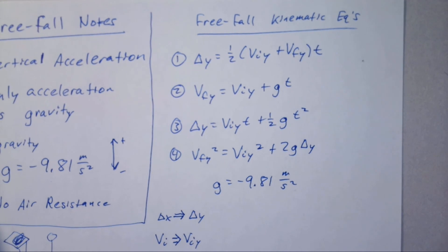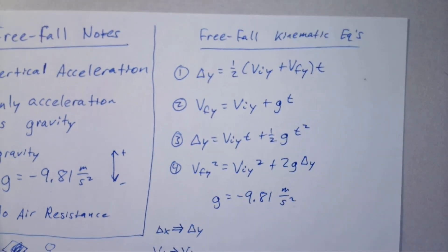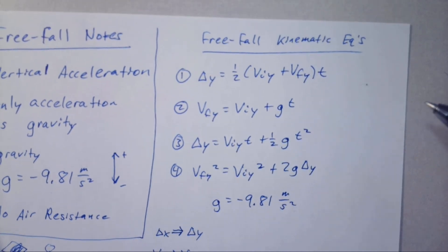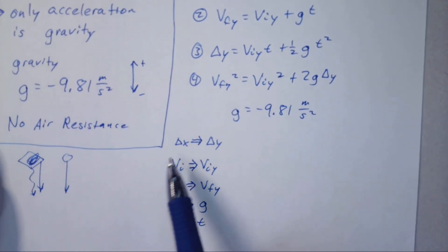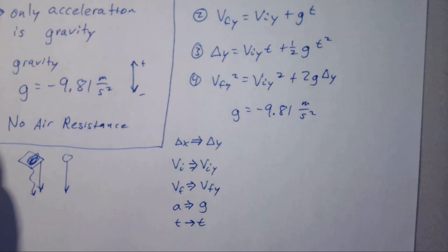Here are the free fall kinematic equations. They're very similar to the ones we had before. The only difference is that we're using the y version, the vertical version. Every time we had a delta x, we now have a delta y.